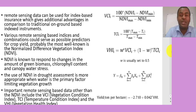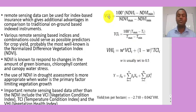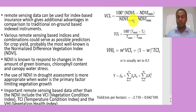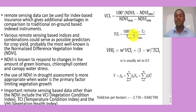For damage assessment, we can use different vegetation indices. One of the first commonly used is the Vegetation Condition Index (VCI), which can be calculated once we compute the Normalized Difference Vegetation Index (NDVI). NDVI is calculated depending on the sensor type — most commonly from the near-infrared and red bands. We can also calculate the Temperature Condition Index (TCI) if we have maximum and minimum temperature data.